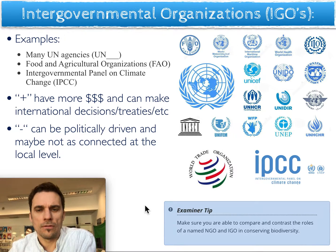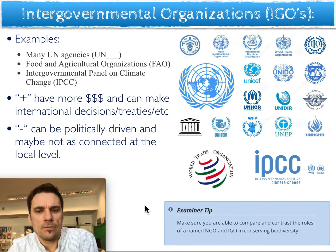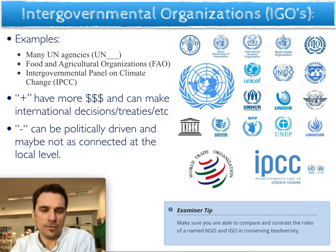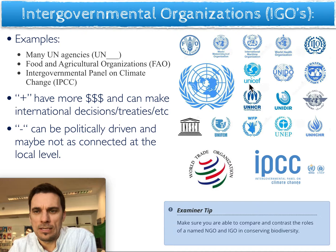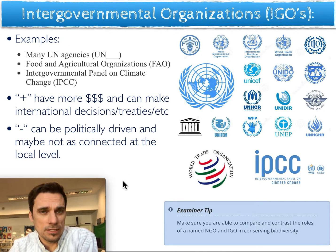To flip to the much larger scale, the United Nations would be considered an IGO — an intergovernmental organization. The United Nations is just the umbrella of many different organizations. Some you may have heard of: UN FAO — Food and Agriculture Organization — UN CDF, UNEP, UNHCR for refugees, and many others. These are very large organizations when we're looking at conservation efforts.